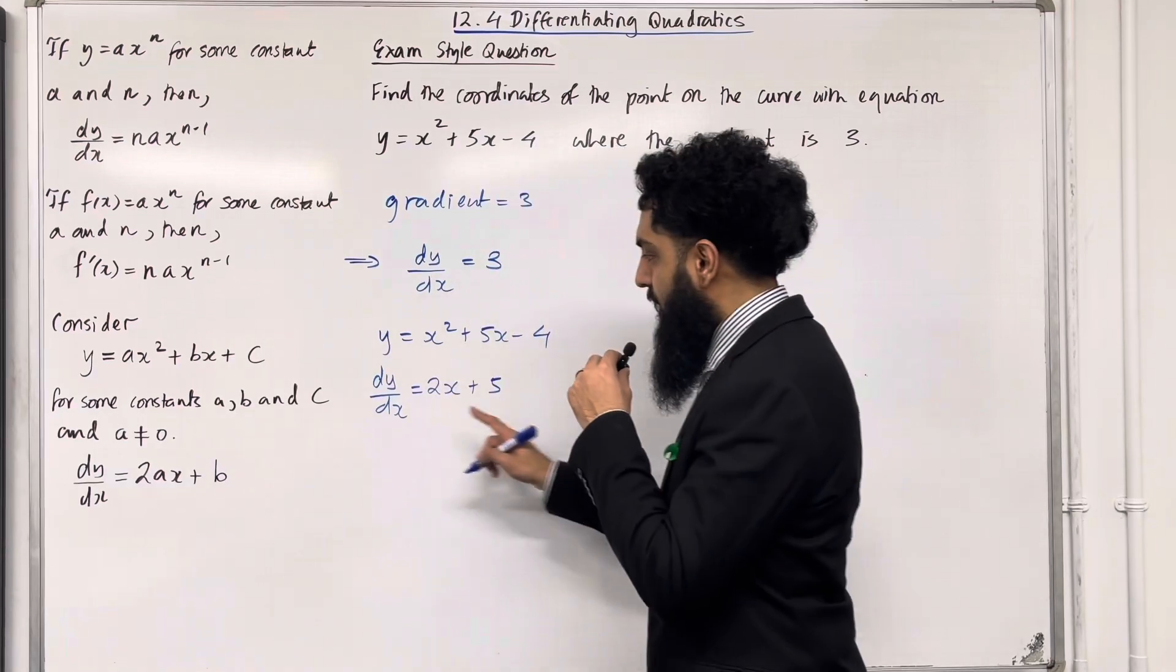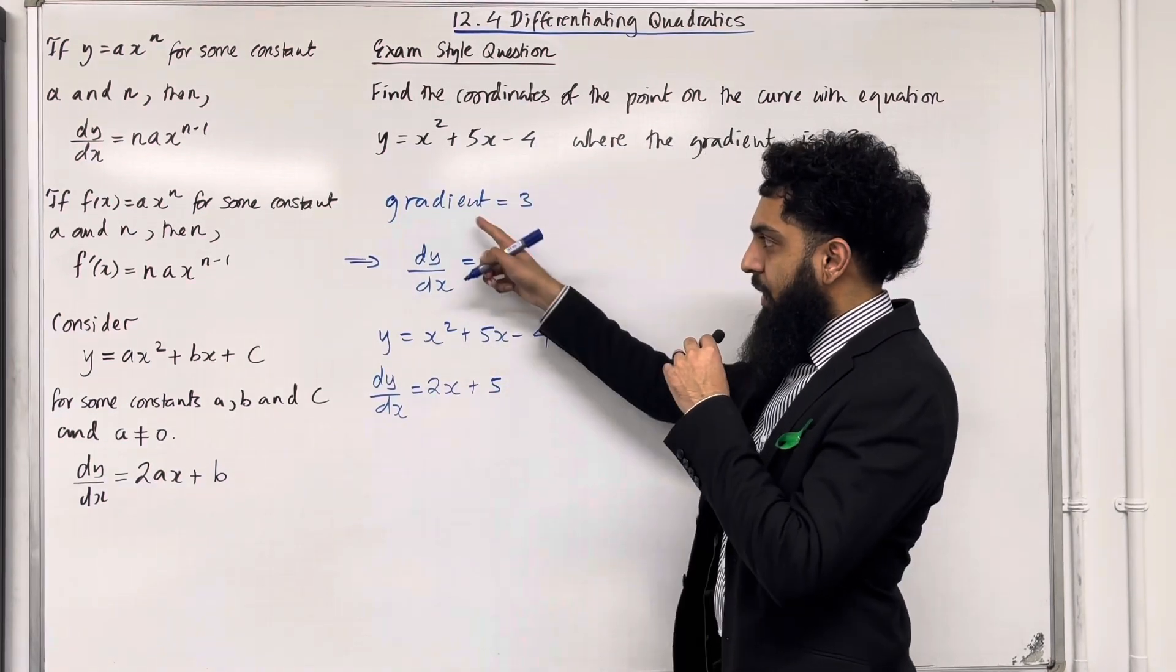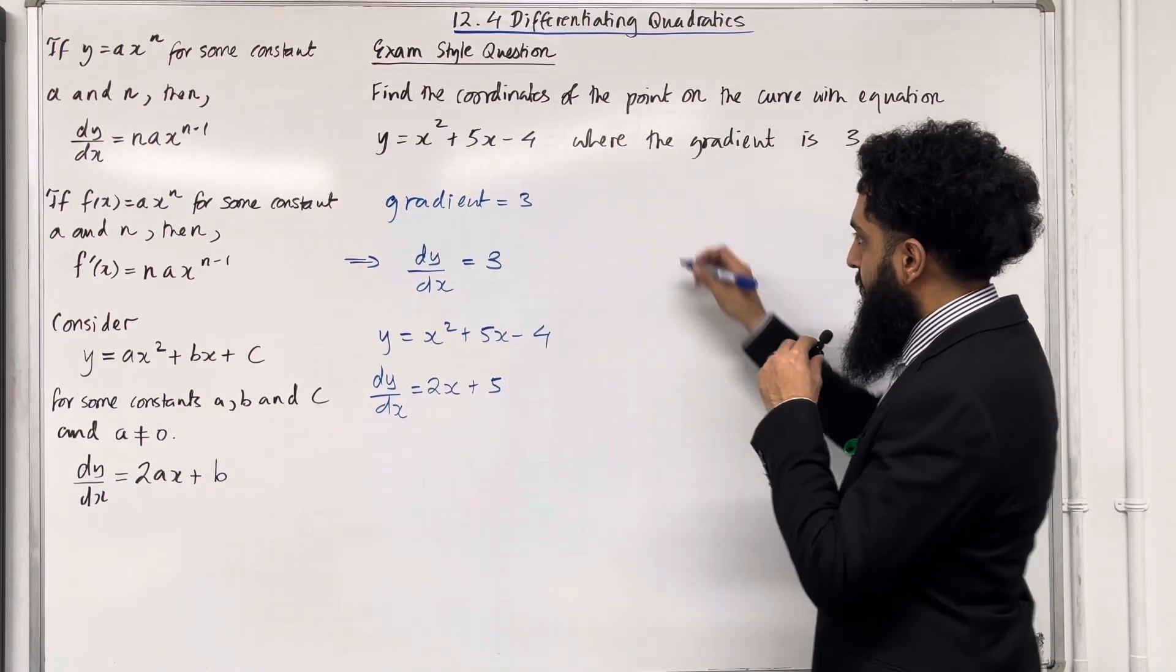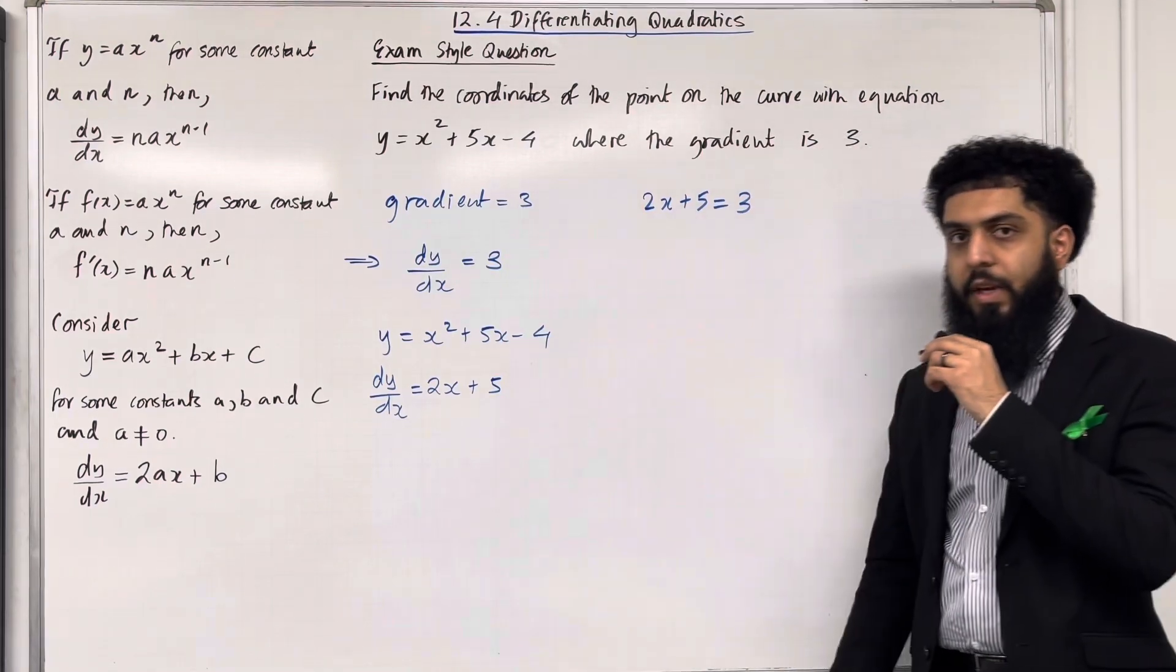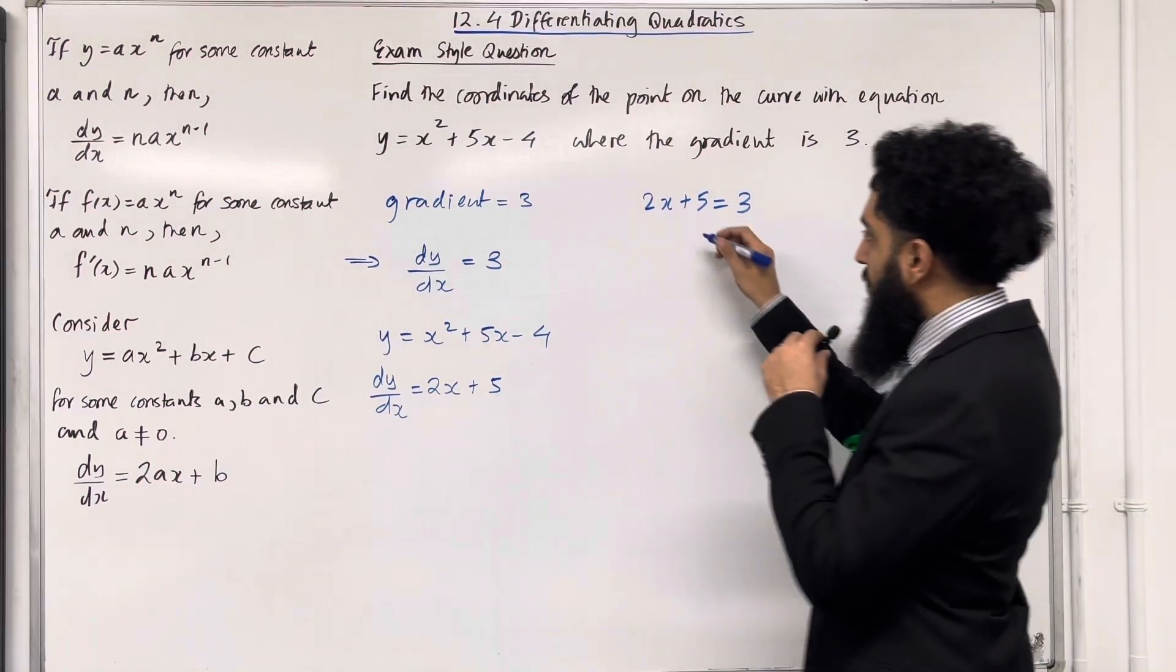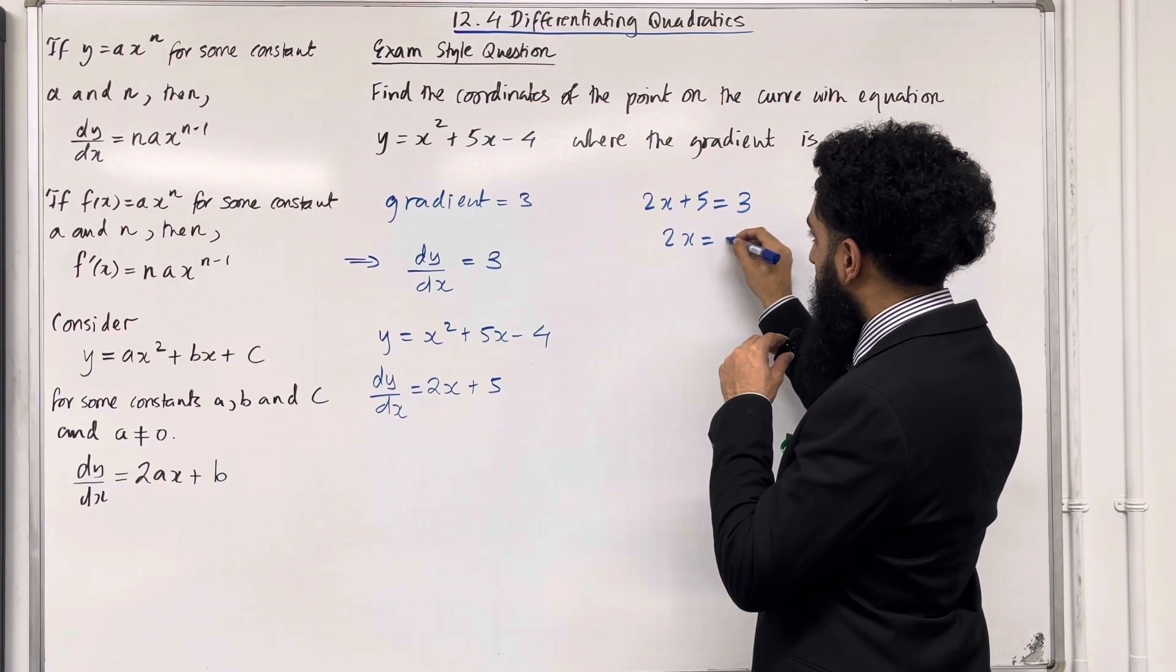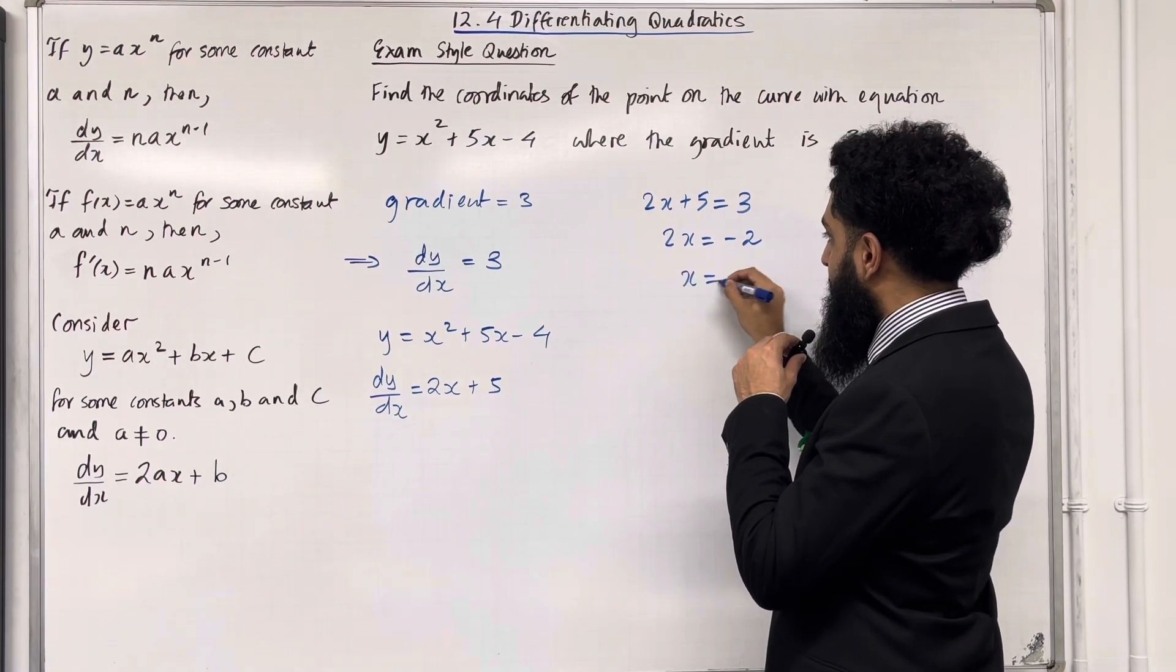So I need to set my dy over dx equal to 3, because the gradient is equal to 3. So 2x plus 5 is equal 3. Now I can solve for x. I've got 2x is equal minus 2, hence x is equal minus 1.